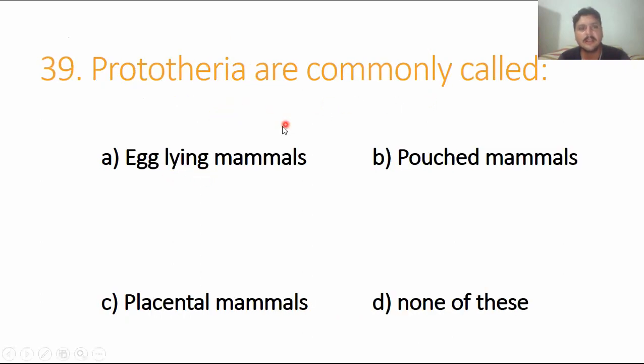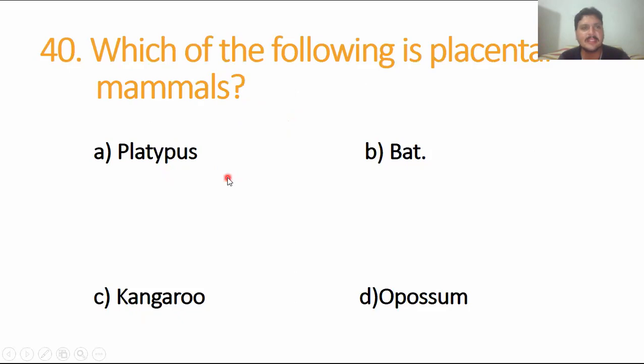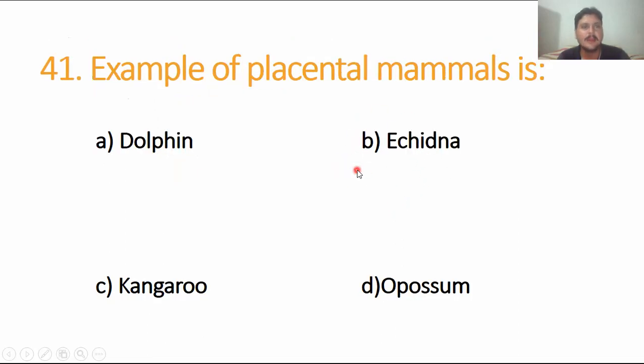Prototheria are commonly called egg-laying mammals, option A. Which of the following is a placental mammal? Platypus is egg-laying, opossum and kangaroo are marsupials, but dolphin is a placental mammal. Example of a placental mammal is dolphin. Again, platypus is egg-laying, opossum and kangaroo are marsupials, dolphin is a mammal.